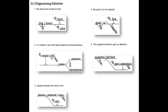Number two: 'To master a new skill takes patience and persistence.' Here the infinitive phrase 'to master a new skill' is functioning as the subject. 'To' is on the slanted line, 'master' is on the straight line, and this takes on a direct object of its own — master what? A new skill. The verb 'takes' has a compound direct object: patience and persistence. Good job if you got that — it was a little tricky.